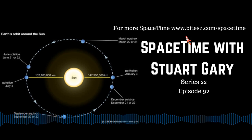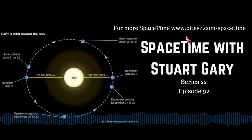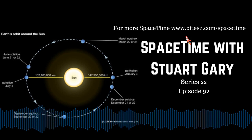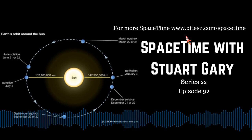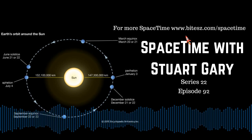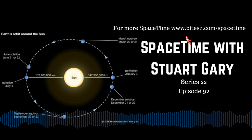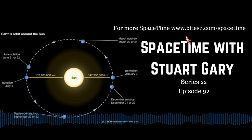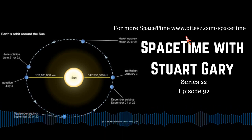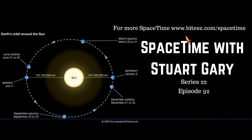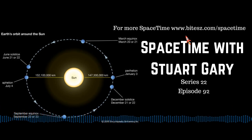The primary star, Alpha Eridani A, is a hot blue spectral type B main sequence star. Its smaller companion, Alpha Eridani B, is a spectral type A white star. The pair orbit each other at a distance of around 12 astronomical units — an astronomical unit being the average distance between the Earth and the sun, about 150 million kilometres or 8.3 light minutes.